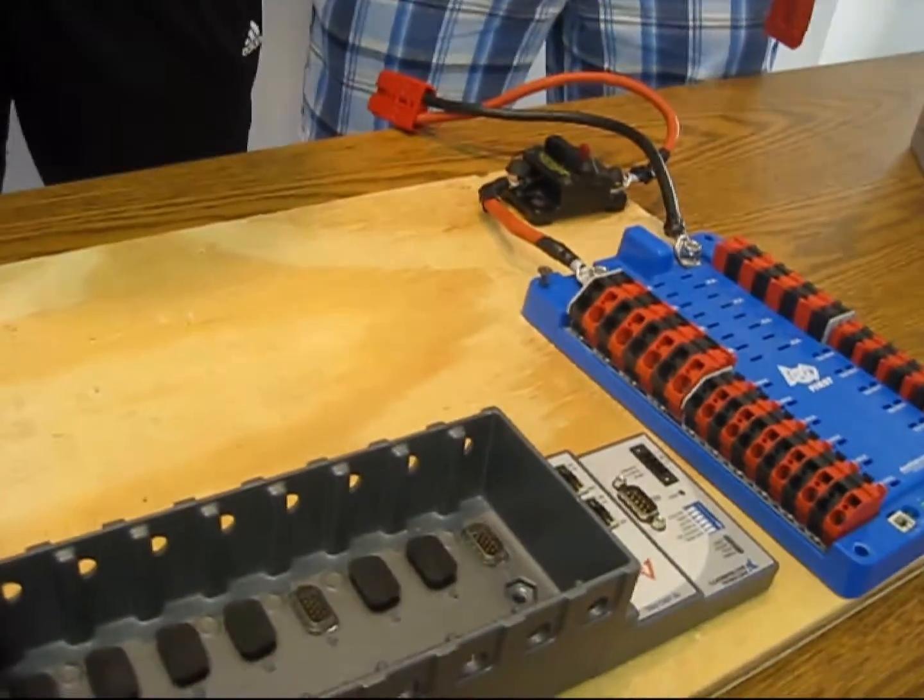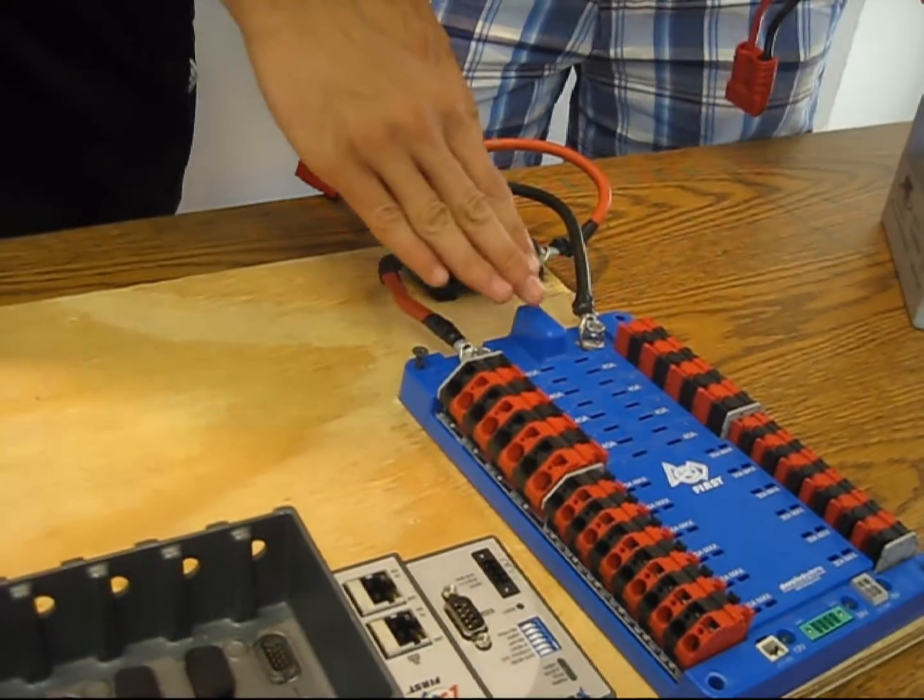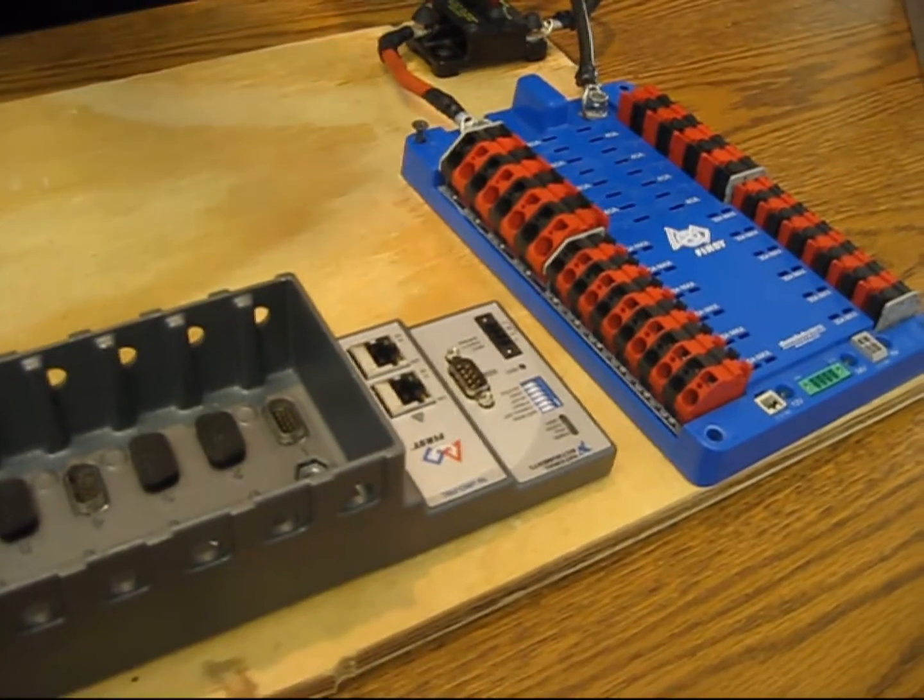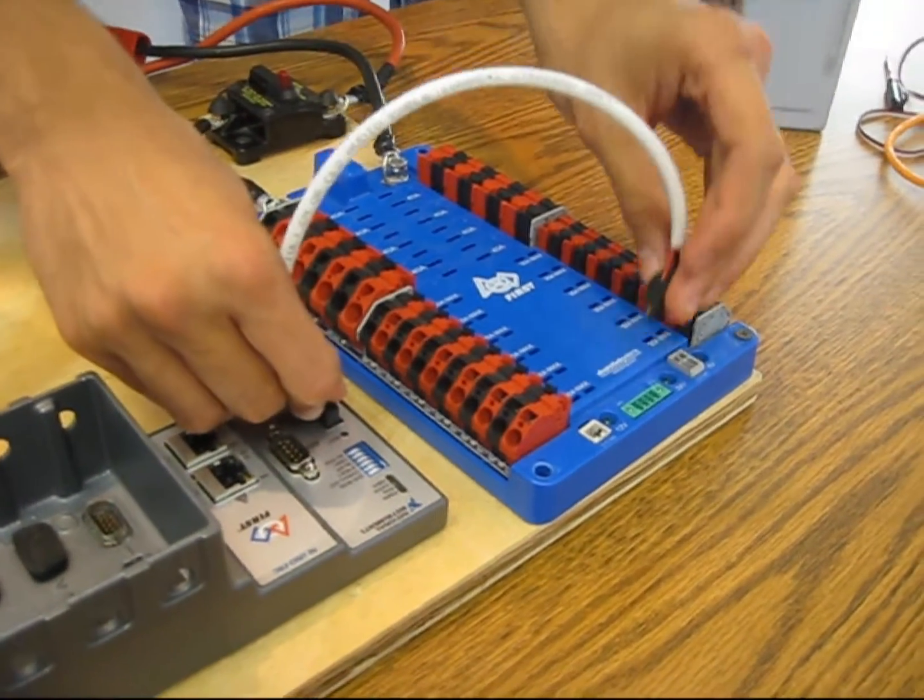This is our sample development platform. Over here, we'll show the hardware setup. We already set up the main breaker to the power distribution board. Our next step is to connect the C-Rio to the power distribution board by plugging in this wire into the 24 volt supply.